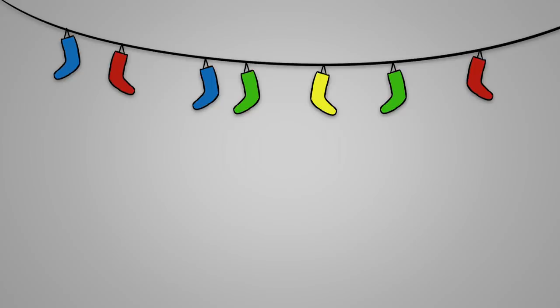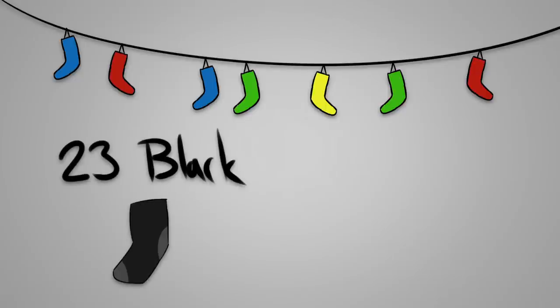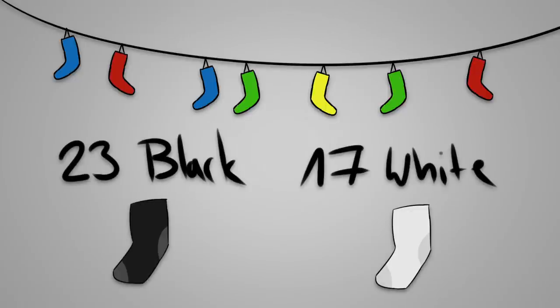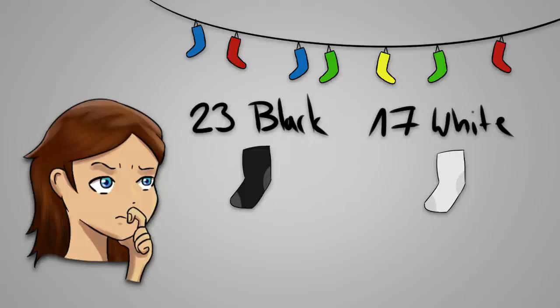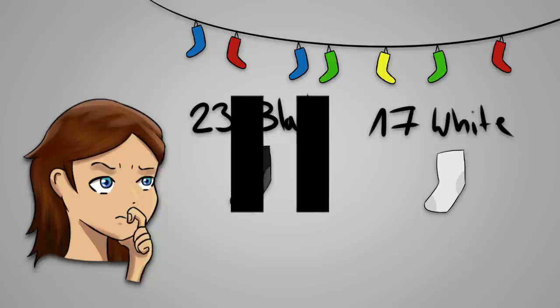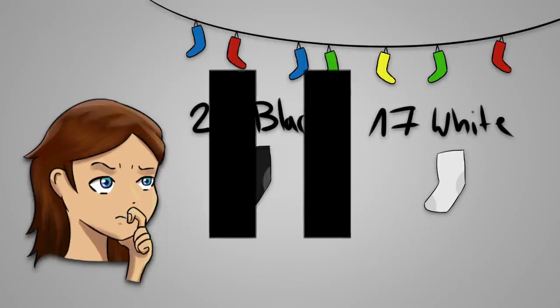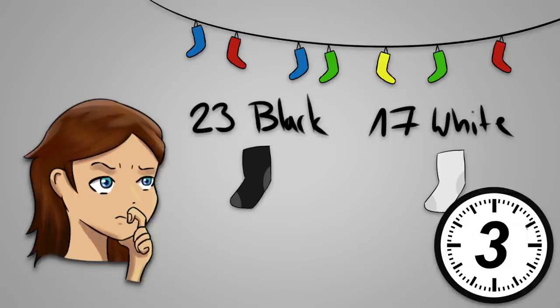She knows that on her clothesline hang 23 black and 17 white socks. How many socks does Anna have to take to be 100% sure to have two same colored socks? Pause the video now to have more time to think. 3, 2, 1.